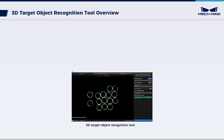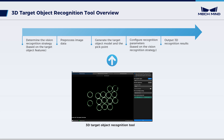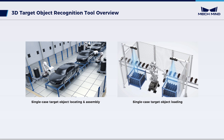As a visualized configurator, the 3D Target Object Recognition Tool integrates the above processing steps and strategies. It allows us to effortlessly recognize object poses, and is commonly used for single-case target objects involving locating, assembly, and loading.